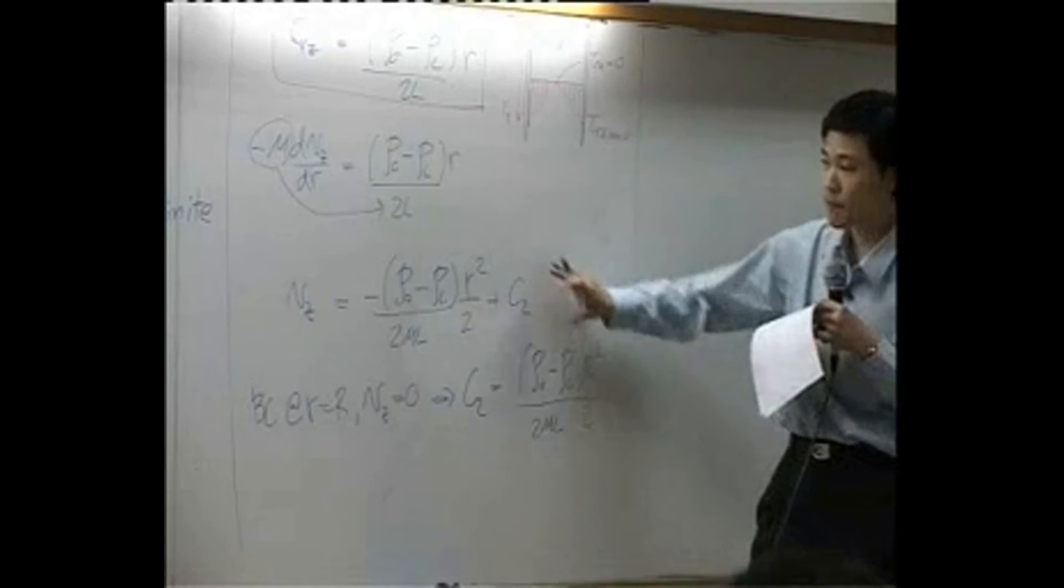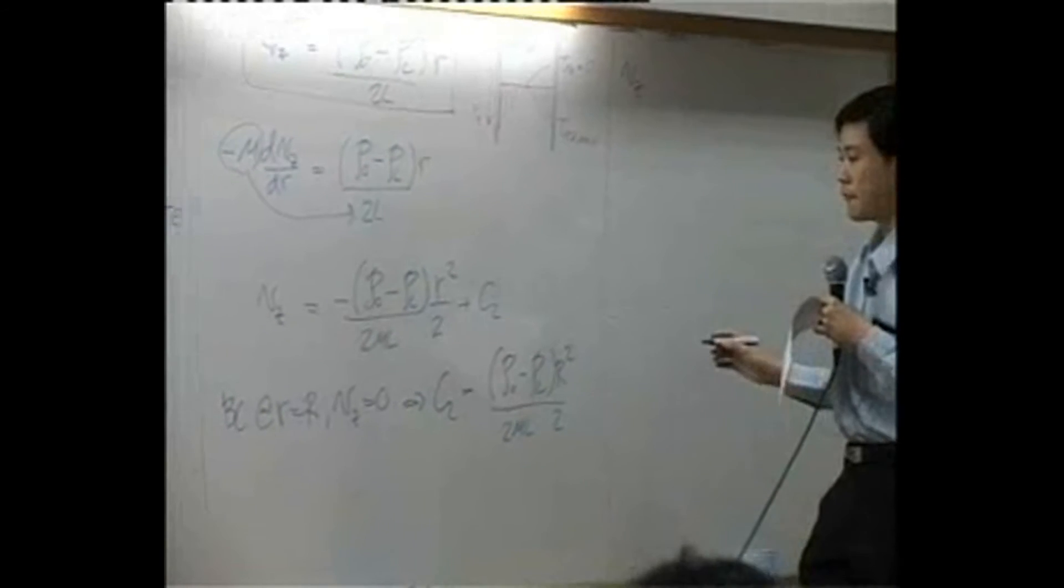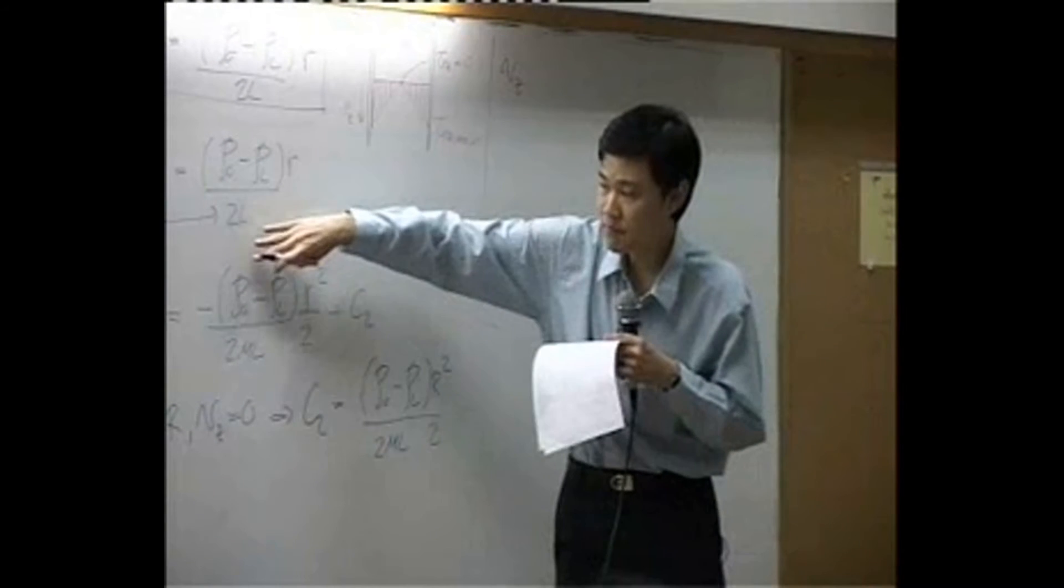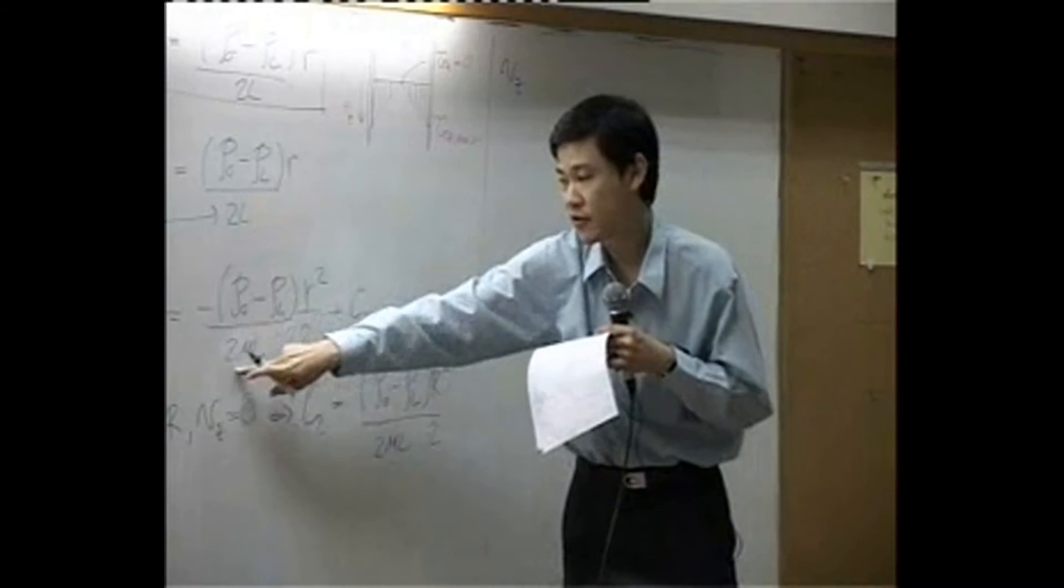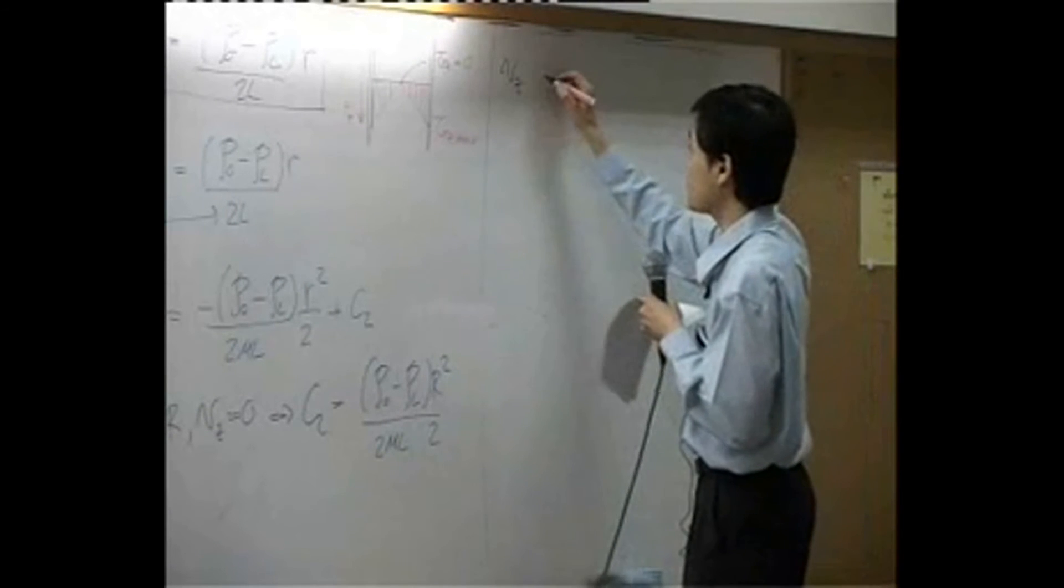If you plug c2 back in here, now you get the velocity profile. You should notice that there are common terms like these: pressure difference, two mu L, and two here will be a common term. So I'm going to take it out.